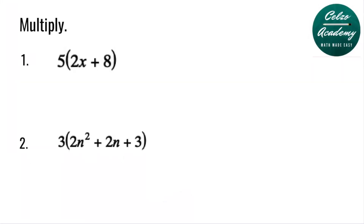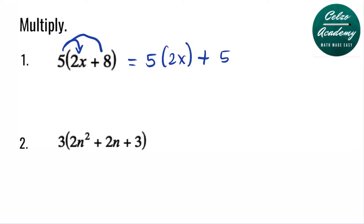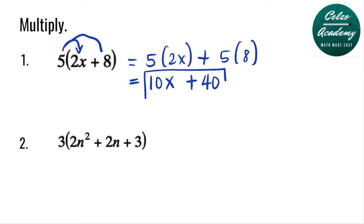Question number 1: multiply 5 times the quantity 2x plus 8. To multiply 5 and 2x plus 8, we need to use the distributive property. First, multiply 5 times 2x, and second, multiply 5 times 8. 5 times 2x is 10x, and 5 times 8 is 40. So the product of question number 1 is 10x plus 40.